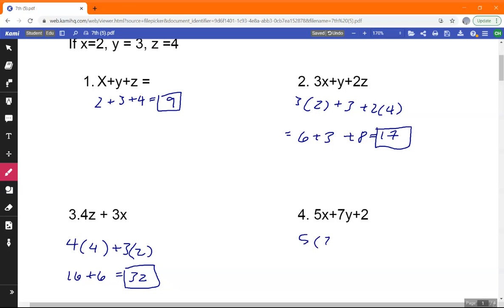5 times 2 plus 7 times 3 plus 2, 10 plus 21 plus 2, that is 33.